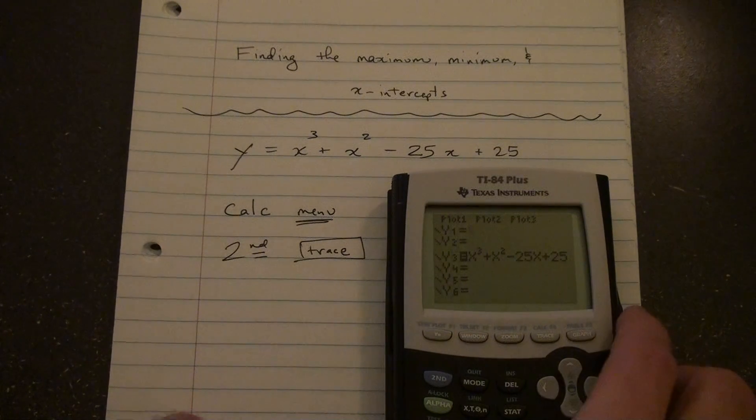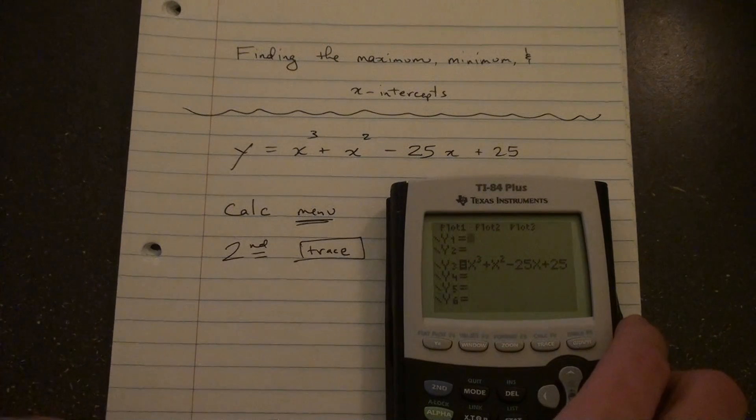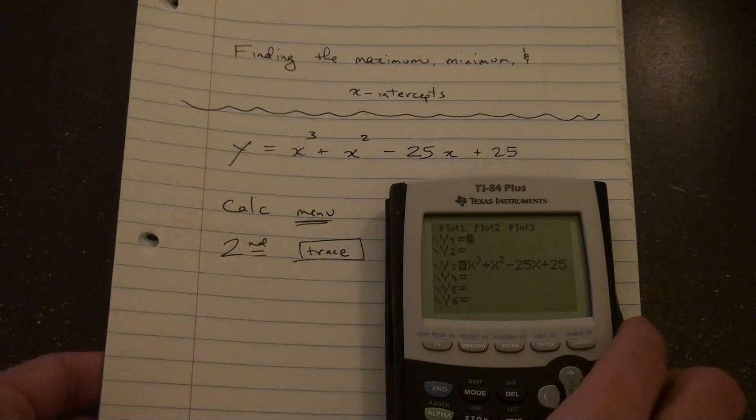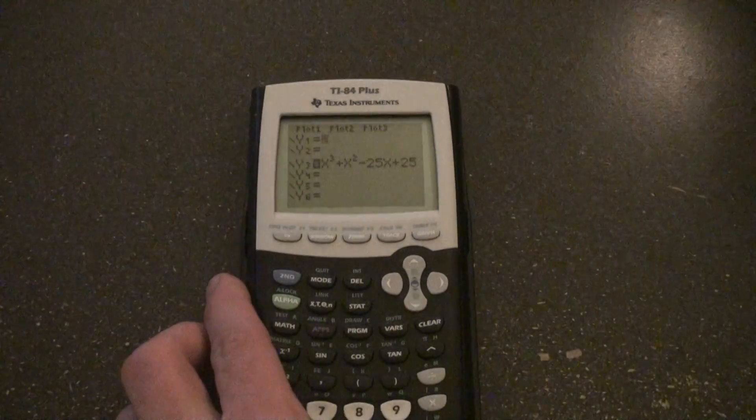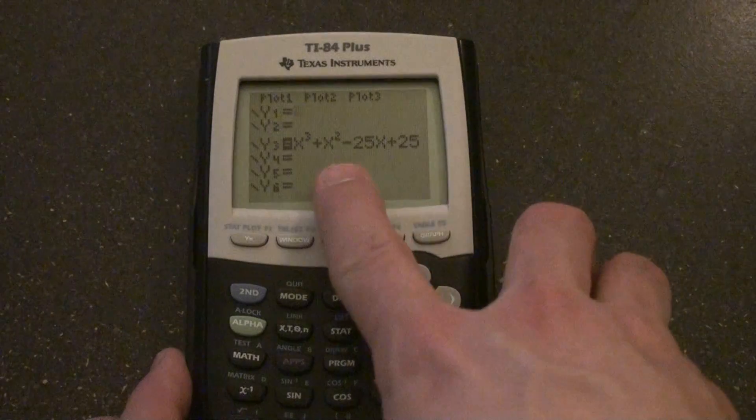So what we're going to do is we're going to type that equation into our calculator, so go ahead and do that. And we're going to use this calculate menu, which is second trace. Here we go. So we've got the equation in.